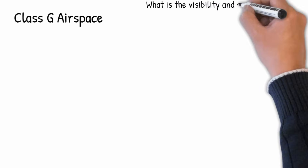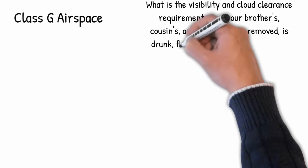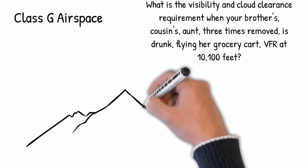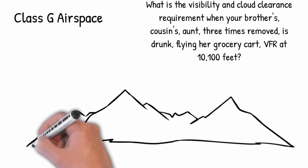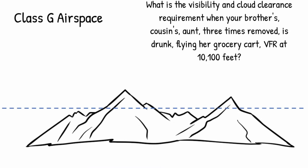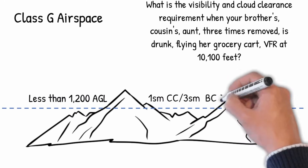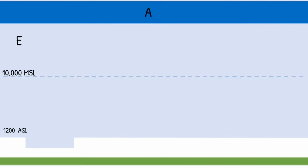Since I already showed you the chart from Part 91, I want to talk about Class G airspace first. At some point in your flying career, you're probably going to hear a question that sounds a lot like this. Your DPE or instructor will point to a spot on a VFR sectional and ask: what is the visibility and cloud clearance requirement when flying VFR at 10,100 feet? Anytime you're less than 1,200 feet AGL, regardless of the MSL altitude, your visibility requirement is one statute mile, clear of clouds. At nighttime, it's three statute miles visibility with basic cloud clearance.